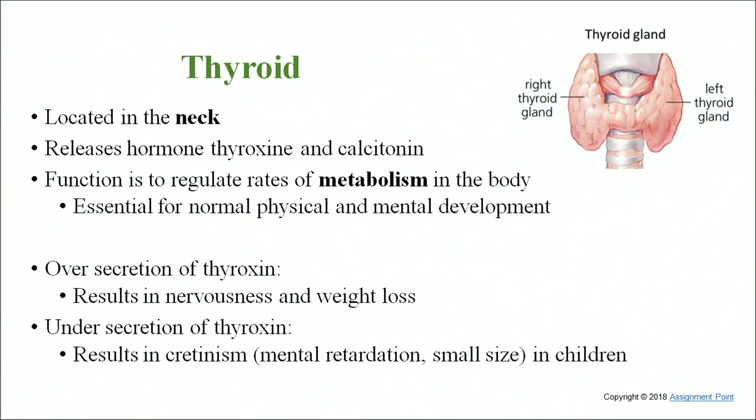The thyroid gland is located in the neck area and releases two hormones: thyroxine and calcitonin. Thyroid regulation is controlled by a cascade pathway — thyrotropin releasing hormone (TRH) stimulates TSH, which in turn induces the thyroid gland. Thyroxine regulates basal metabolism — the rate of cellular oxidation resulting in heat production — and also controls growth, development, body temperature, and mental development.